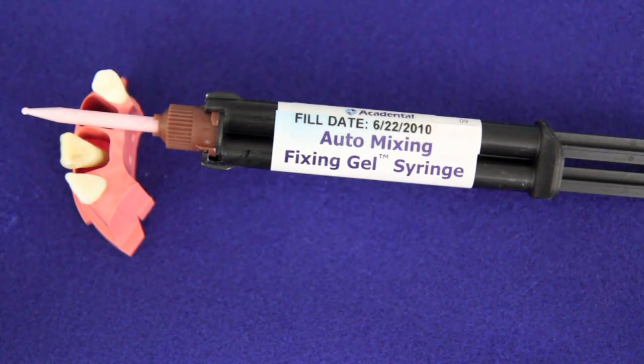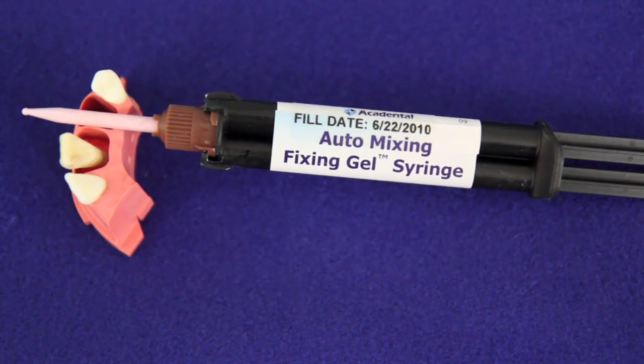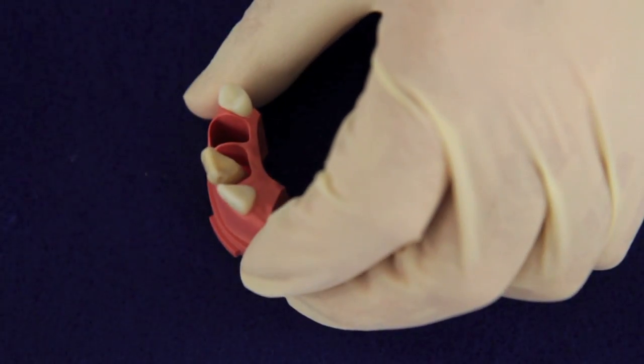Now we're going to use fixing gel to secure the tooth within the segment. The fixing gel is very like a flowable composite. Its handling properties are a bit like that of light body impression material. We're going to try and keep the tip within the body of the material, and we're going to try and keep the tip moving as we apply the gel inside the segment.